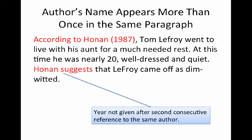Now, if you mention an author's name more than once in a single paragraph, give the year after the first mention in the signal phrase like you normally would, but not after subsequent references in the same paragraph. Your reader will assume that you are using the same source.